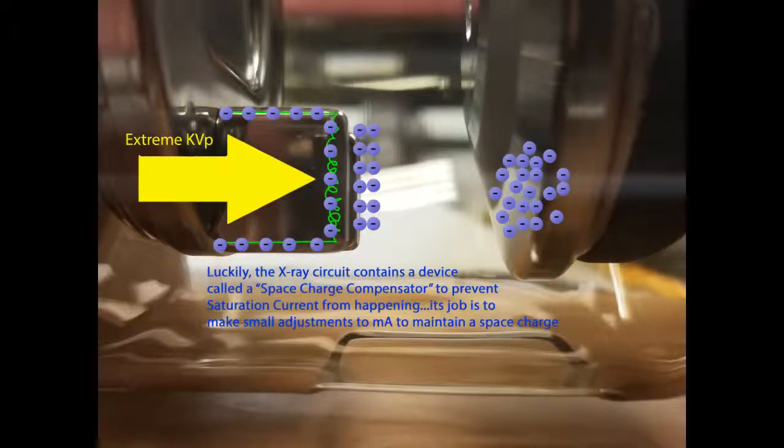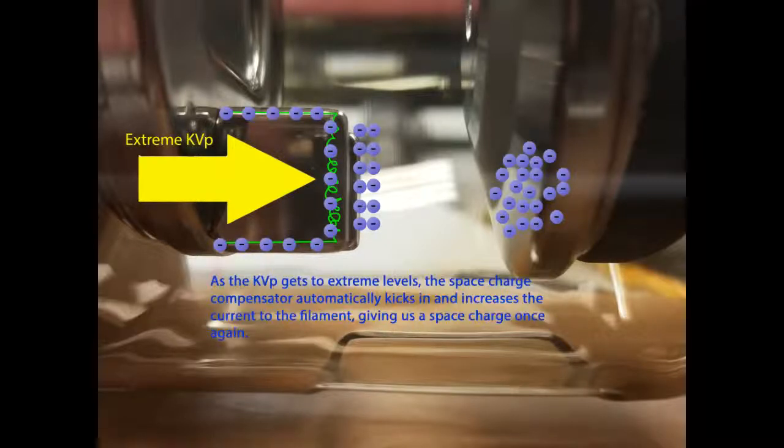Luckily, the x-ray circuit contains a device called a space charge compensator to prevent saturation current from happening. Its job is to make small adjustments to mA to maintain a space charge. As the KVP gets to extreme levels, the space charge compensator automatically kicks in and increases the current to the filament, giving us a space charge once again.